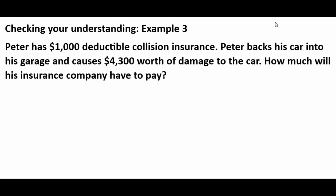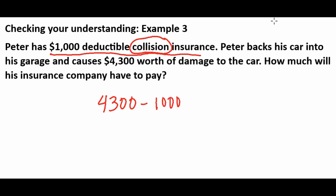Example number three: Peter has a $1,000 deductible collision insurance. Peter backs his car into his garage and causes $4,300 worth of damage. Collision is the keyword - his car was in motion. The insurance company takes the first $1,000 as the deductible, then cuts him a check for the difference. So: $4,300 minus $1,000 deductible means the insurance company pays $3,300.